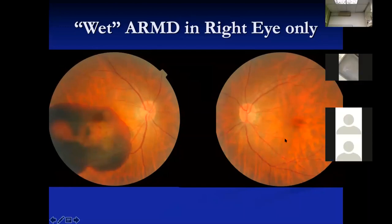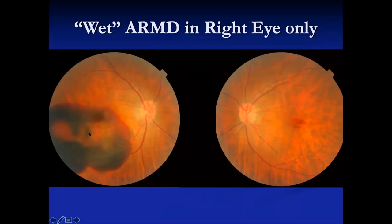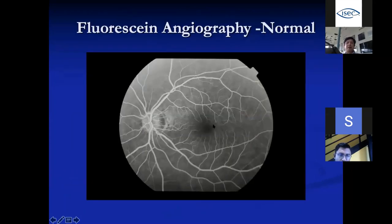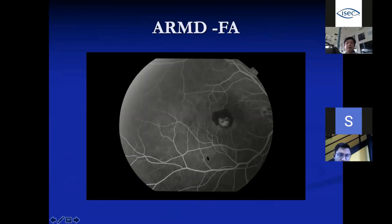In the old days, fluorescein angiography was used to diagnose abnormal blood vessels (CNV). On a normal angiogram, there should be no fluorescence in the center; abnormal fluorescence in the center confirms abnormal blood vessels, while dark areas represent masking from blood. OCT now gives us a cross-section to visualize this directly. On first-generation OCT you can see the swelling and the abnormal blood vessel layer under the retina causing leakage. With modern high-resolution OCT, we can diagnose CNV confidently without needing an angiogram in most cases.